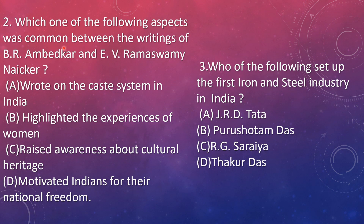Next: which of the following aspects was common between the writings of B.R. Ambedkar and E.V. Ramaswami Naicker? These two people were writing articles — what was the common theme? The options are: wrote on caste system in India, highlighted experiences of women, raised awareness about cultural heritage, motivated Indians for national freedom. They wrote on the caste system in India. Ambedkar was from a lower class family and faced many problems from upper caste people, so he wrote more about the caste system.